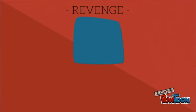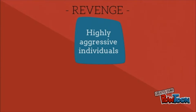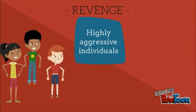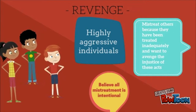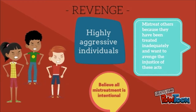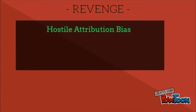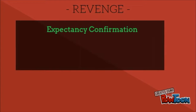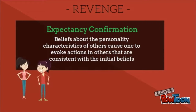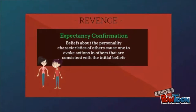For revenge, a student will believe that all mistreatment is intentional, resulting in the false assumption that others do not like them. These students can be highly aggressive, and may mistreat others because they have been treated unkindly and want to avenge their injustice. The hostility attribution bias is the tendency of individuals with high hostility to infer that others are being hostile towards them in the face of ambiguous behavior, while expectancy confirmation is when beliefs about a personality characteristic cause one to evoke actions in others consistent with the initial belief.